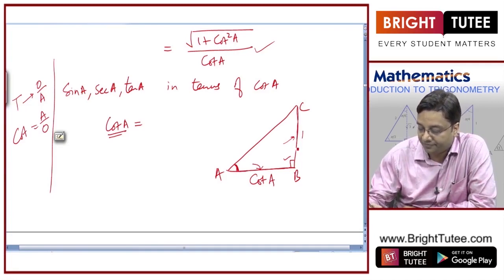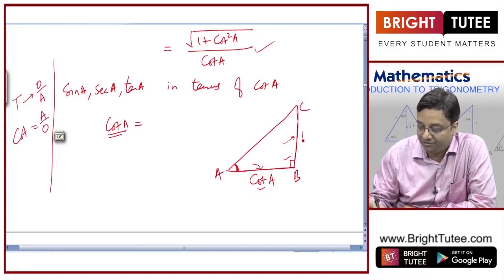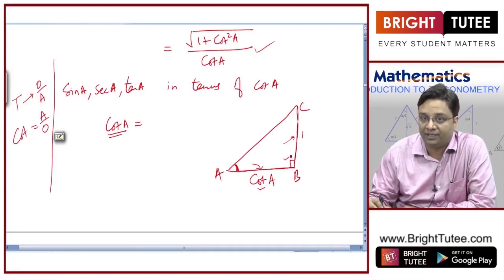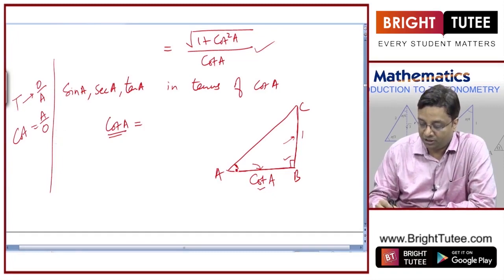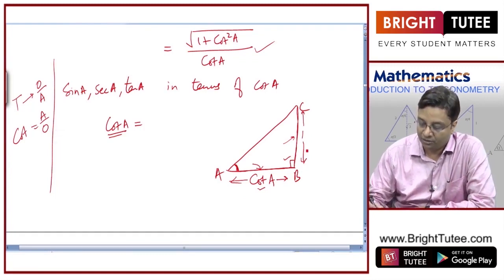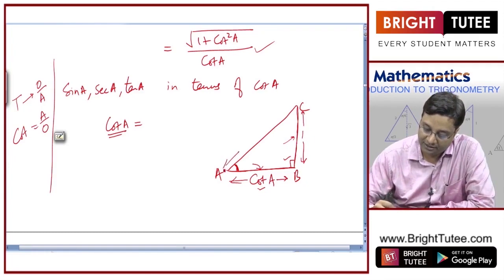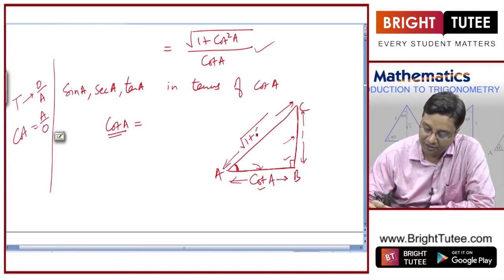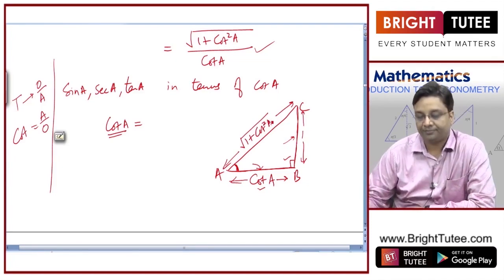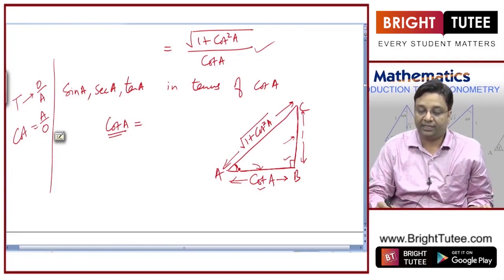So if I take this side as cot a, I take the opposite side as one. This confirms cot a equals this side divided by this side. By Pythagoras theorem, the hypotenuse is the square root of one plus cot squared a. Now you can find sin a, cos a, secant a — anything.